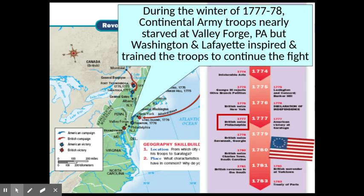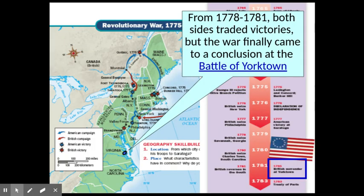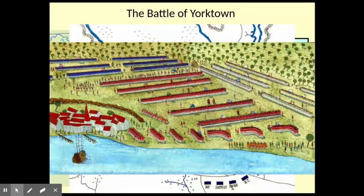Washington's men were at Valley Forge for winter camp — starving and fighting off smallpox. Washington inoculated the troops there, which saved the day. Baron von Steuben also showed up to help train the army. From 1778 to 1781, both sides traded victories, but the war finally came down to the conclusive Battle of Yorktown — the last battle of the Revolutionary War. The British surrendered. It took a couple of years for the peace treaty, the Treaty of Paris, to be signed and ratified in 1783.